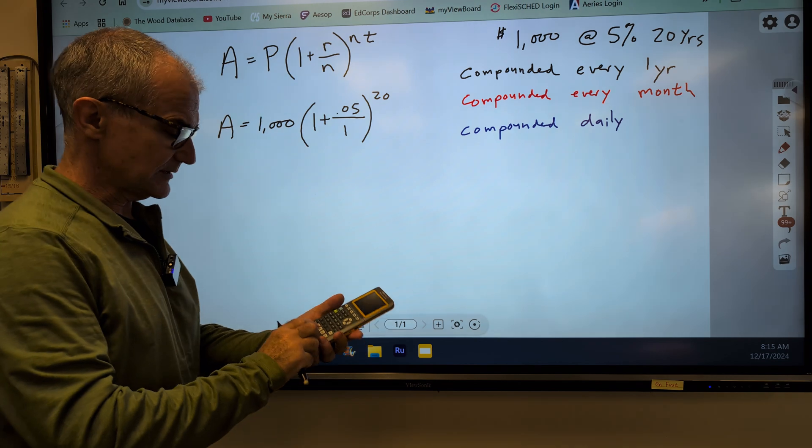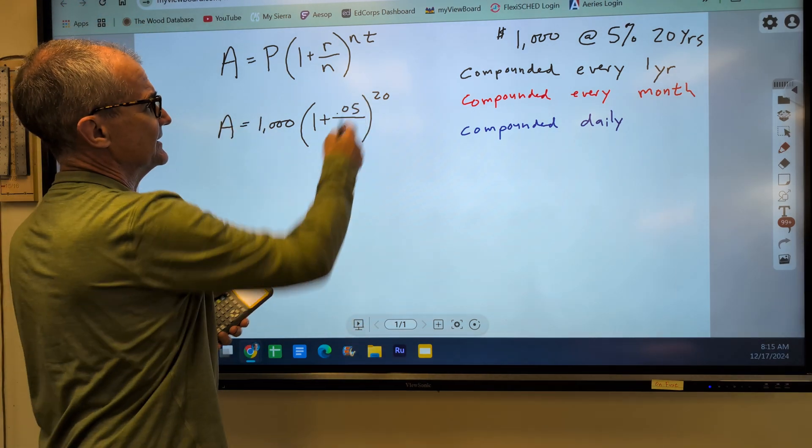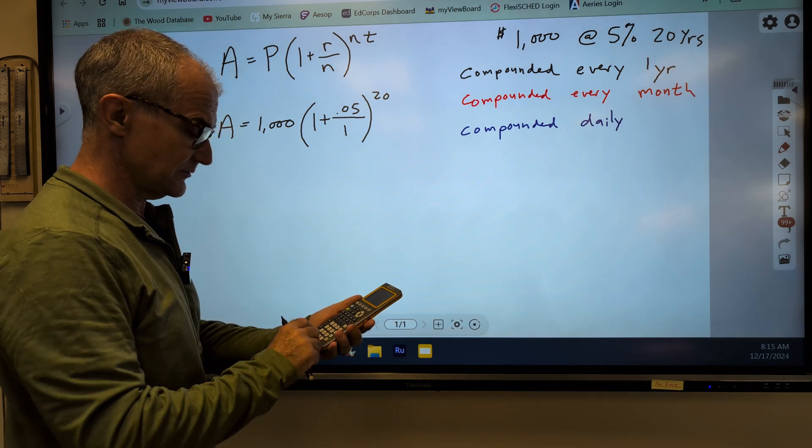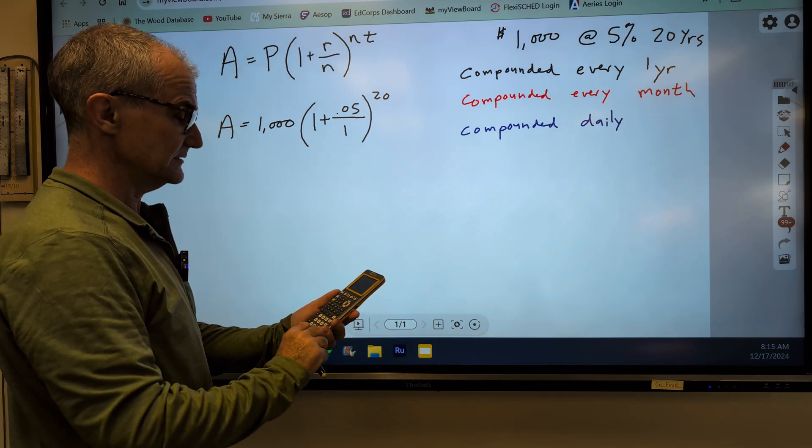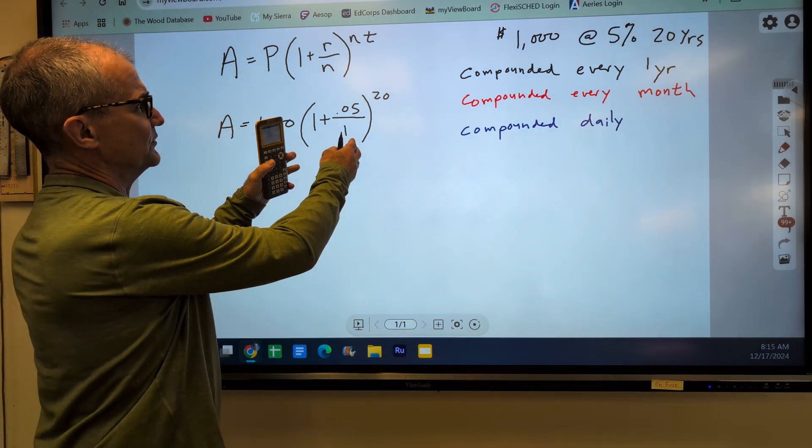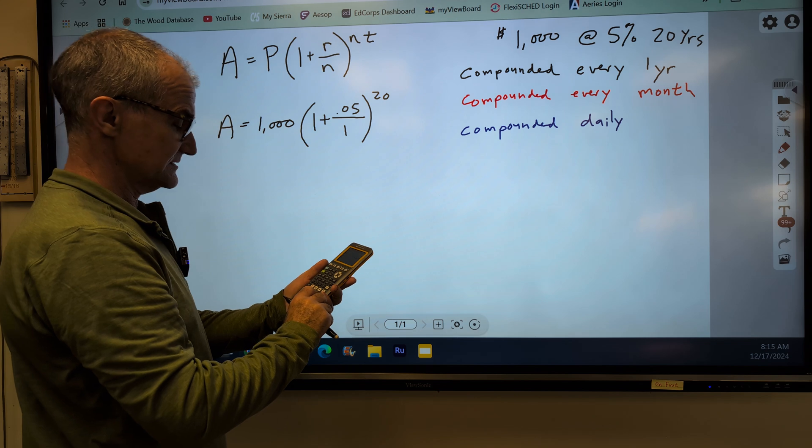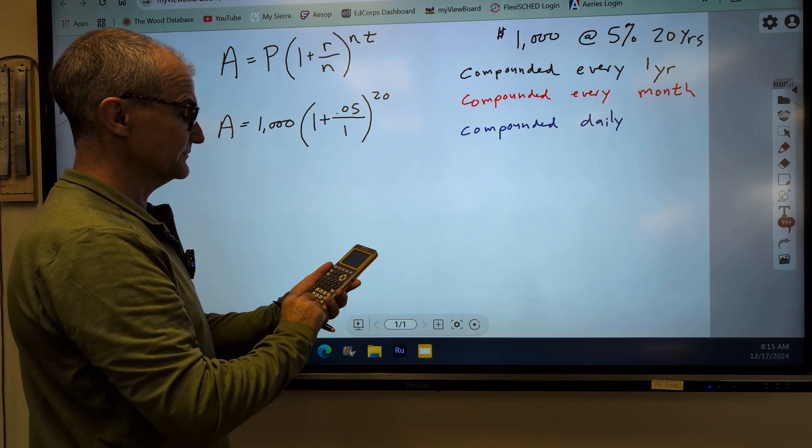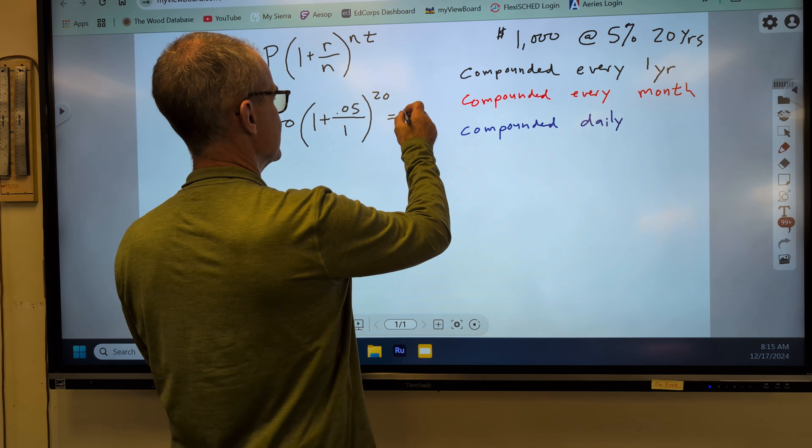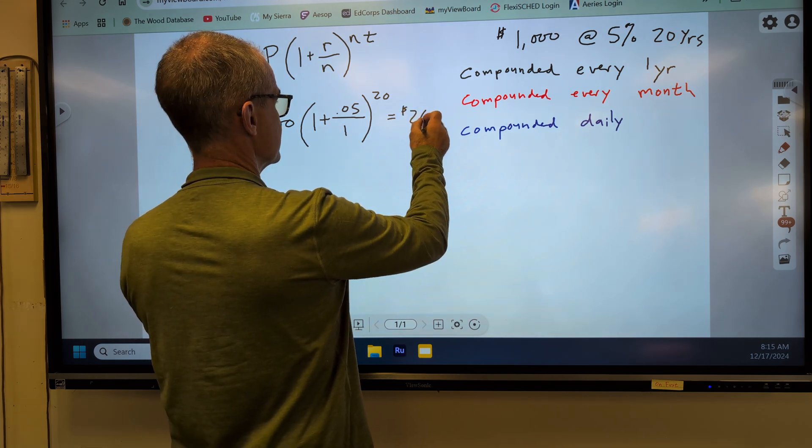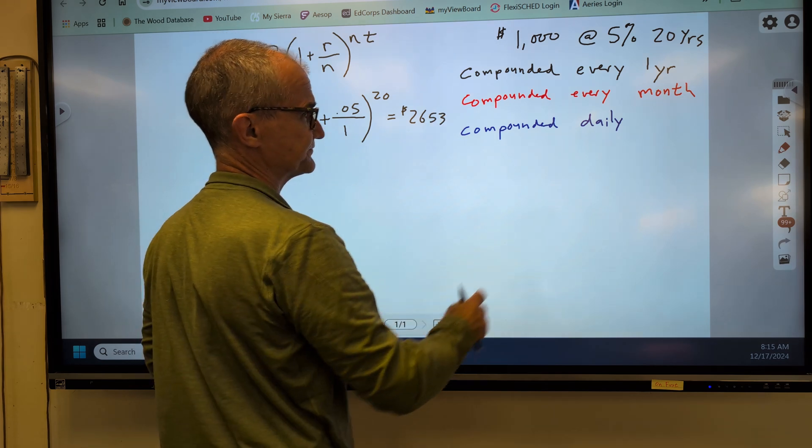I have to really remember my order of operations to do this. Parentheses and then exponents. So I'm going to do .05 divided by 1, which is .05 plus 1. So this is 1.05 to the power of 20 times 1,000. And that's going to give me, in 20 years, my $1,000 will grow to $2,653.